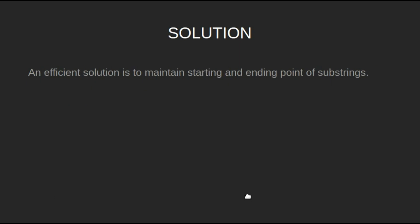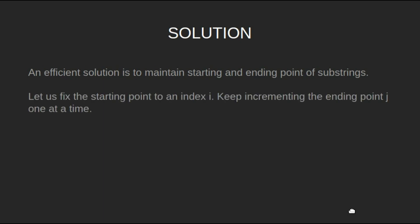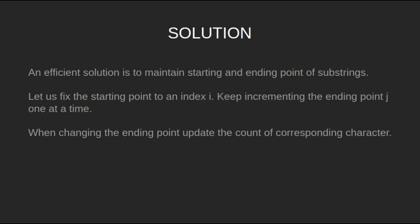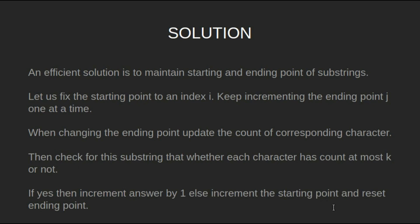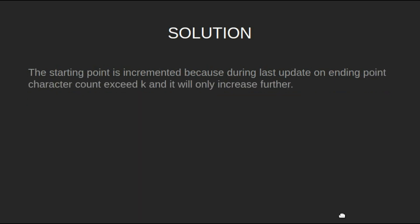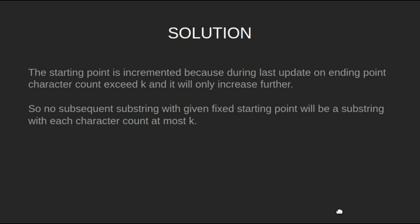An efficient solution is to maintain the starting point and ending point of the substrings. Fix the starting point at index i and keep incrementing the ending point j one at a time. When changing the ending point, update the count of the corresponding character, then check whether each character has count at most k. If yes, increment the answer by one; else increment the starting point and reset the ending point. The starting point is incremented because once the character count exceeds k, no subsequent substring with the given fixed starting point will be valid.